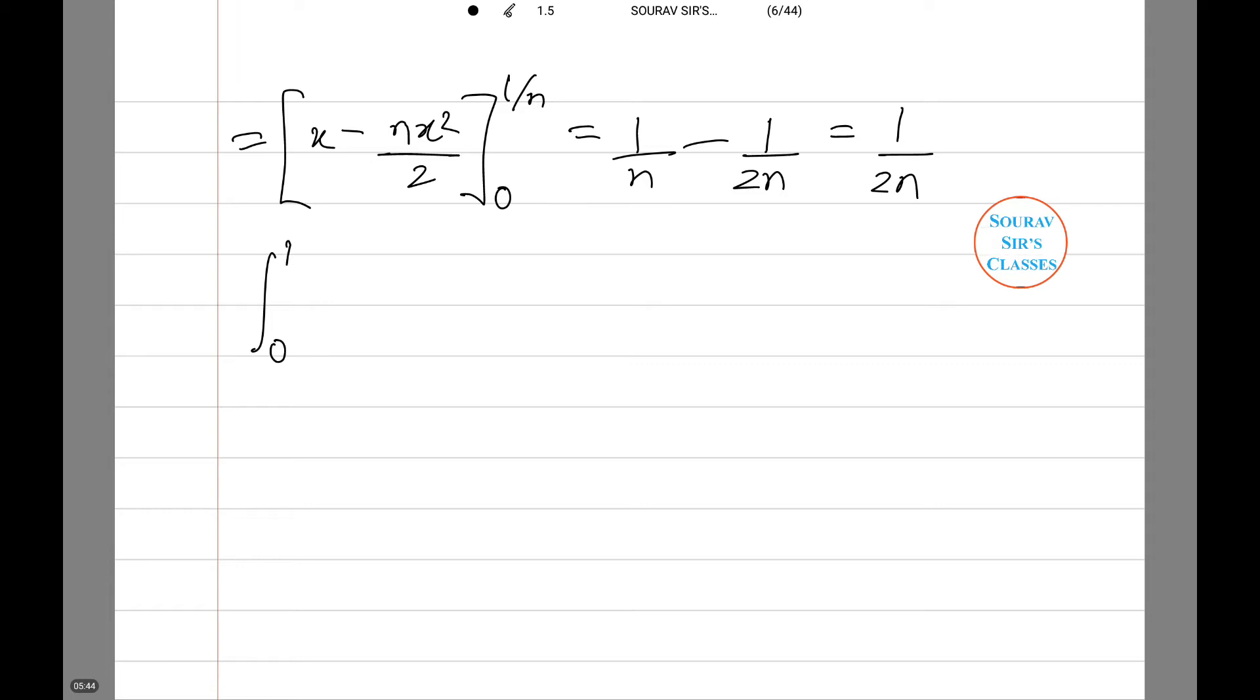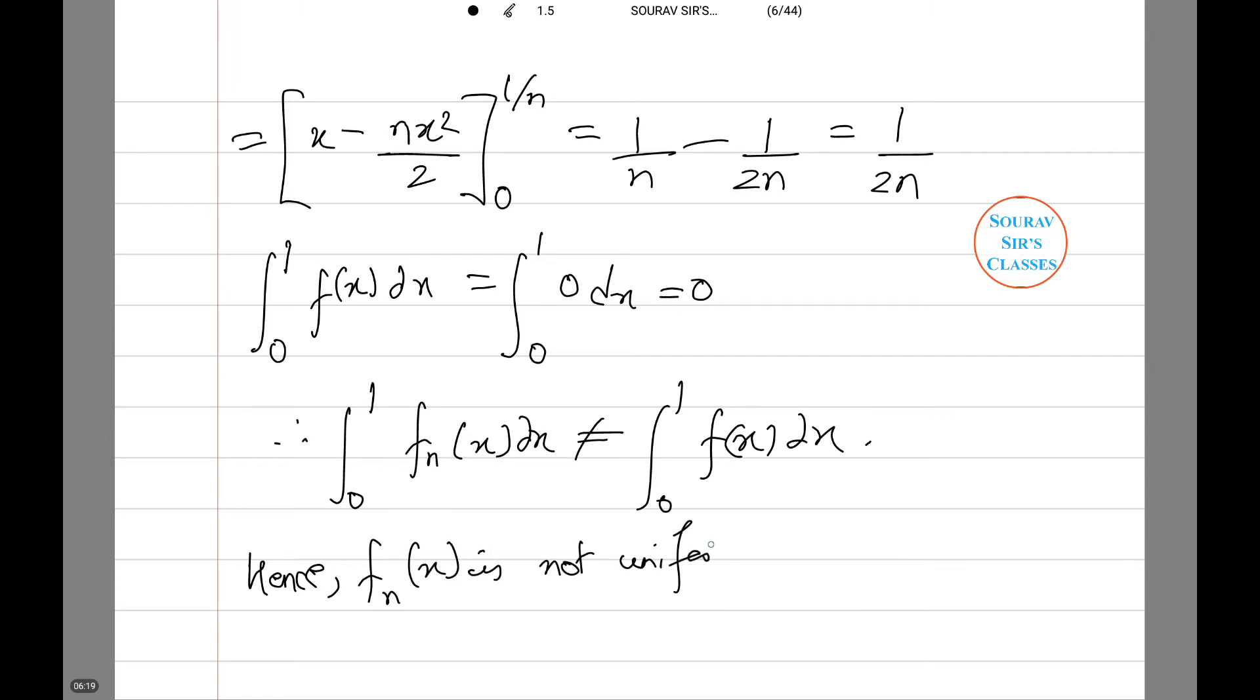However, the integral from 0 to 1 of f(x) dx is 0, while the integral from 0 to 1 of f_n(x) dx is not equal to 0. Hence f_n(x) is not uniformly distributed.